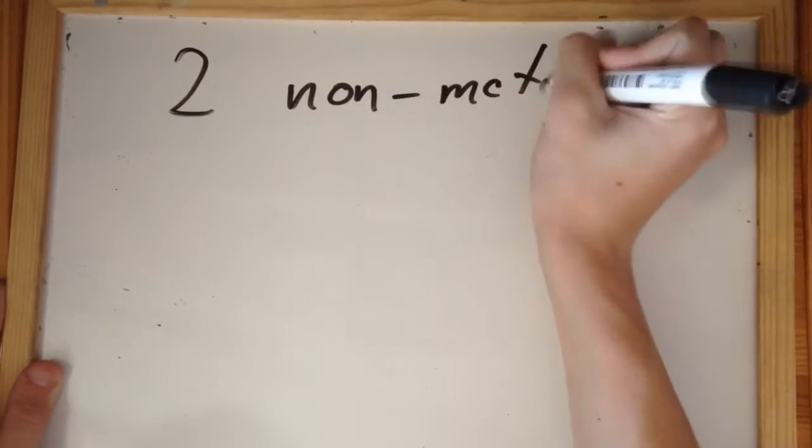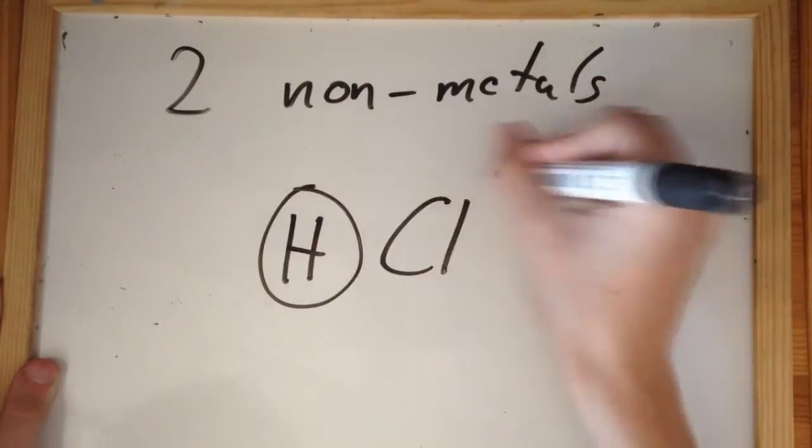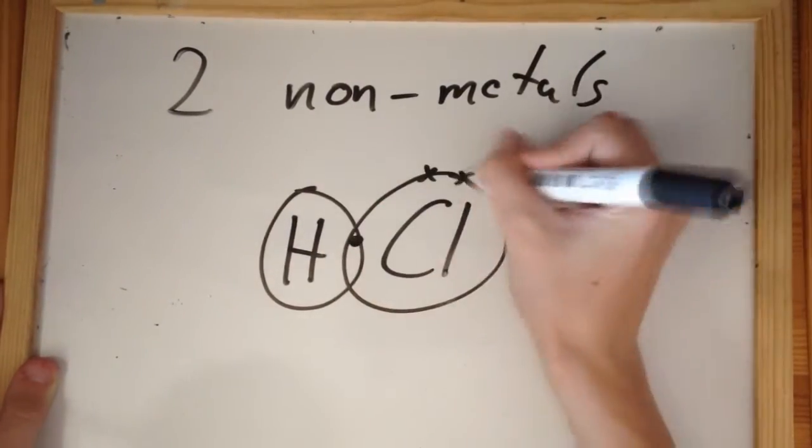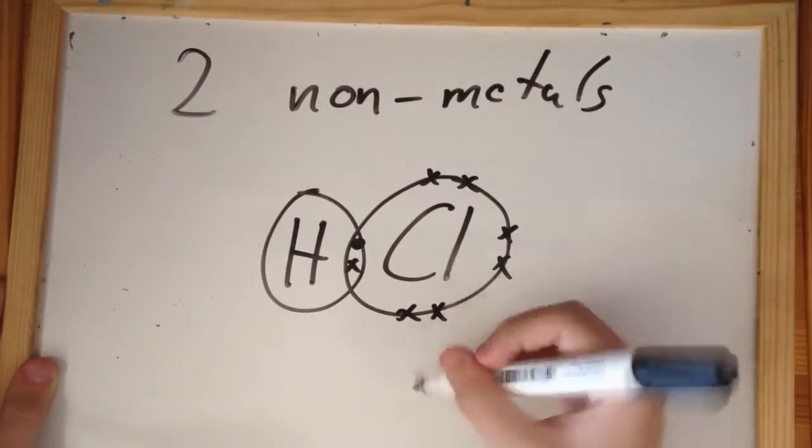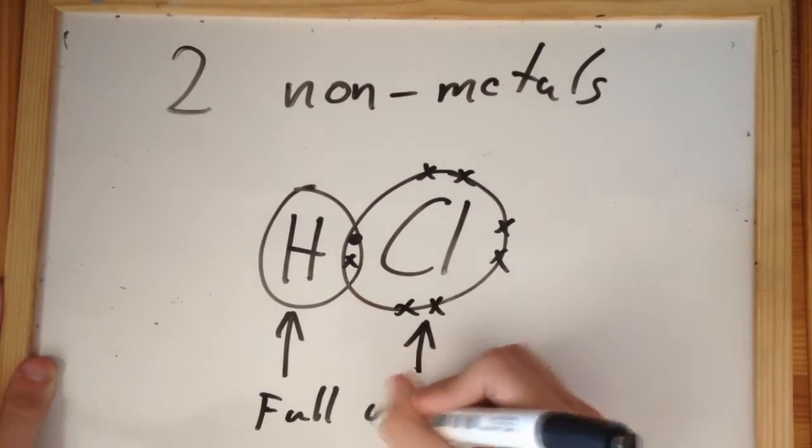Covalent bonds occur between two nonmetals such as hydrogen and chlorine. The two atoms share electrons in their outer shells in order to maintain the electronic configuration of the noble gas.